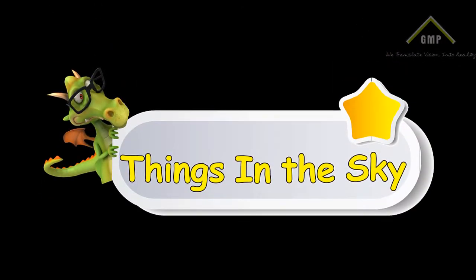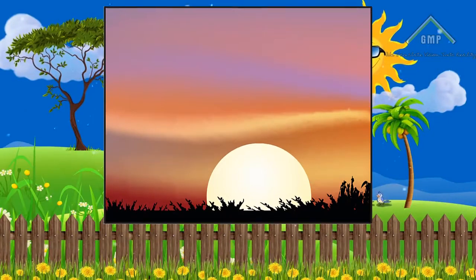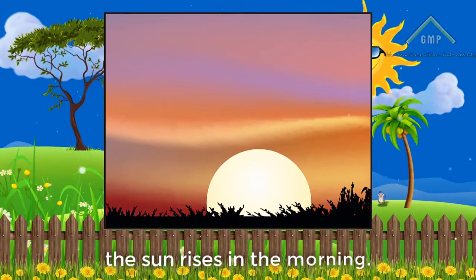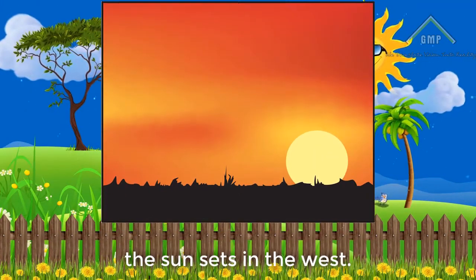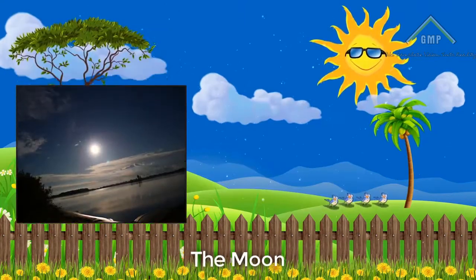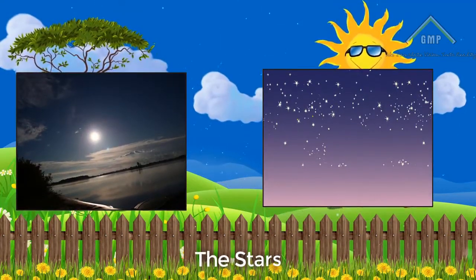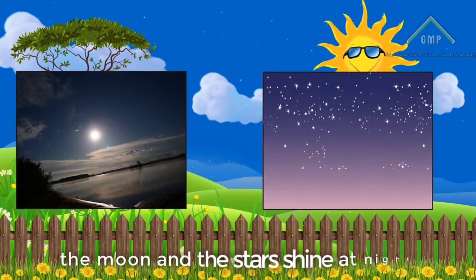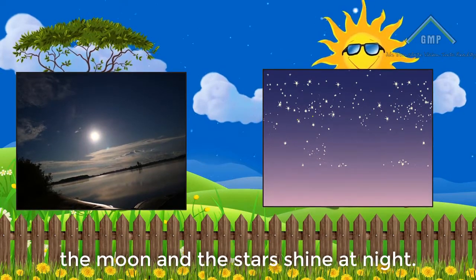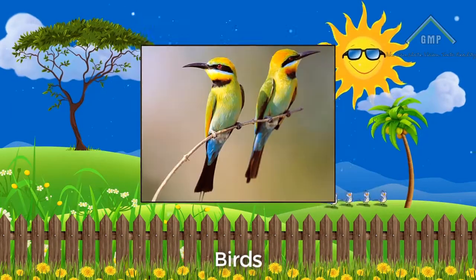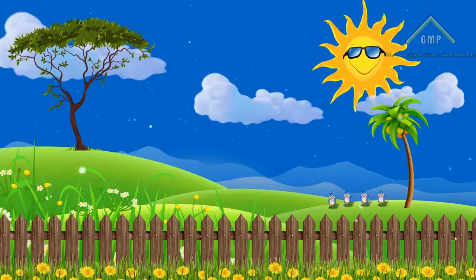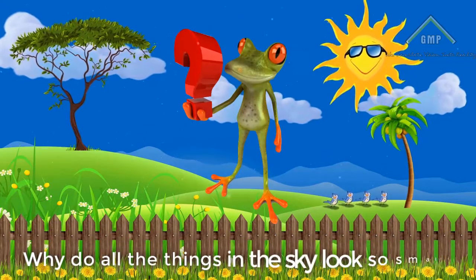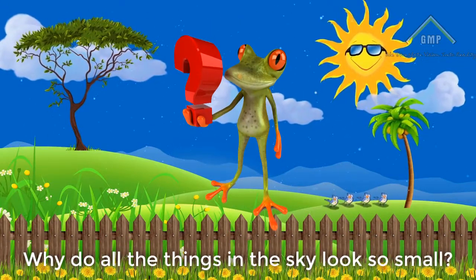Things in the sky. The sun rises in the morning. The sun sets in the west. The moon. The stars. The moon and the stars shine at night. Birds. Clouds. Aeroplane. Why do all the things in the sky look so small?